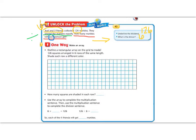In order to solve this problem, we're going to use some multiplication to solve a division problem. We know that multiplication and division are inverse operations. They undo each other. So we can use one to solve the other. The first way we can do it is by making a picture or an array. It says, Outline a rectangular array on the model with 126 squares arranged in six rows of the same length. Shade each row a different color. Before I start drawing, let's do some math to know about how long each row should be.